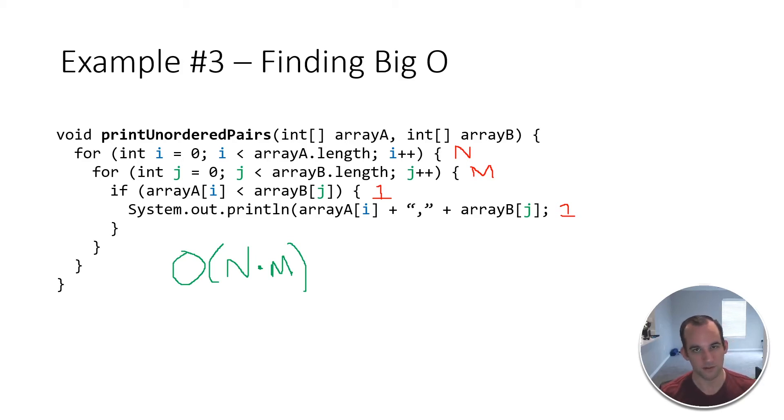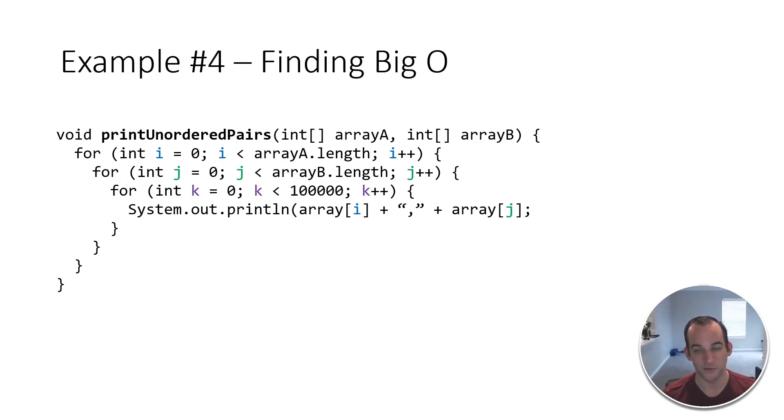So that's something you also have to make sure of when you're looking at these in an interview question. Look at the inputs - are they distinct? And even if they're distinct, make sure they're not trying to trick you, and maybe they're only using one of the arrays in the actual piece of code. Make sure you're using both of them. And if both of these loops were using array A's length, Big O of N squared would be the answer. But it's not, so that's the answer.